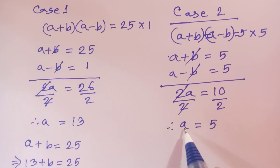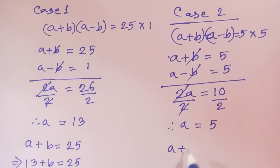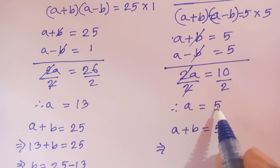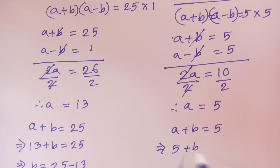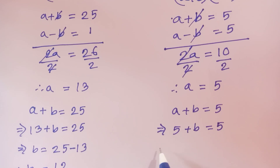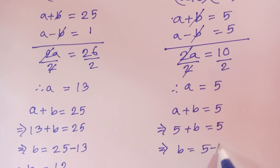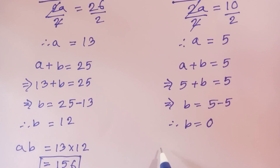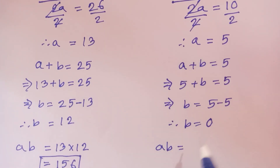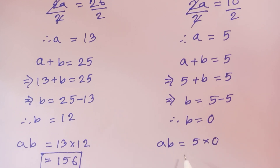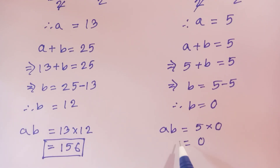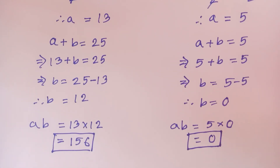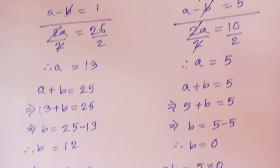Substituting a equals 5 into the first equation, a plus b equals 5, we get b equals 0. Therefore AB equals a times b equals 5 times 0, so AB equals 0. Thanks for watching, please subscribe to my channel for more videos, bye bye!